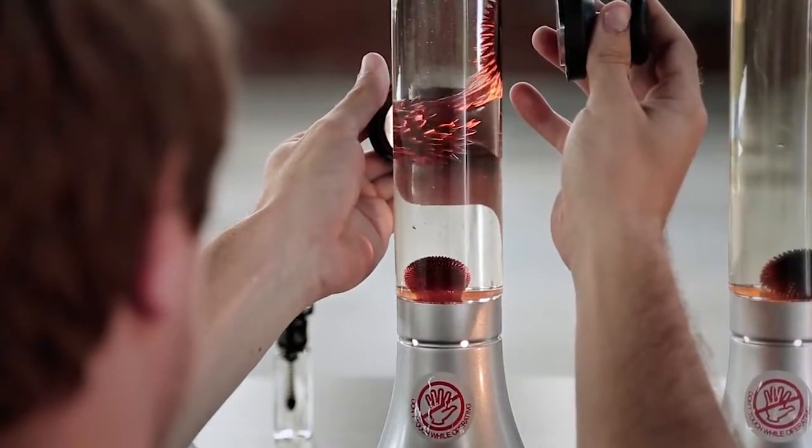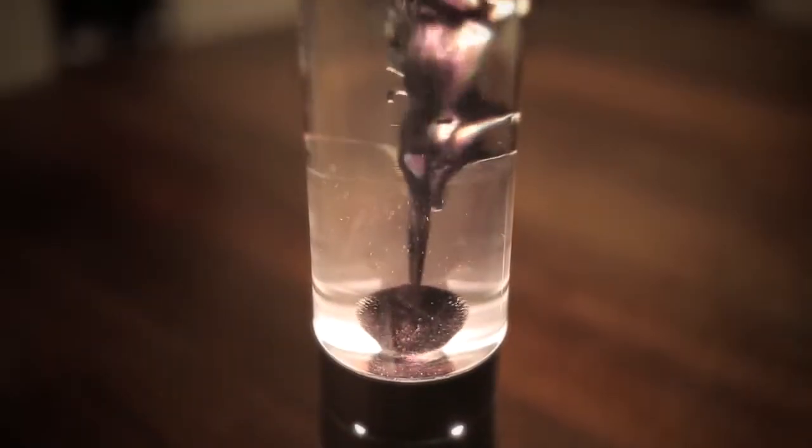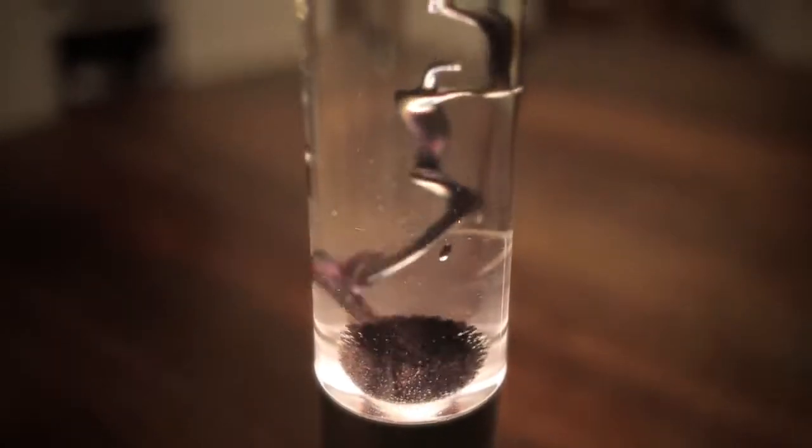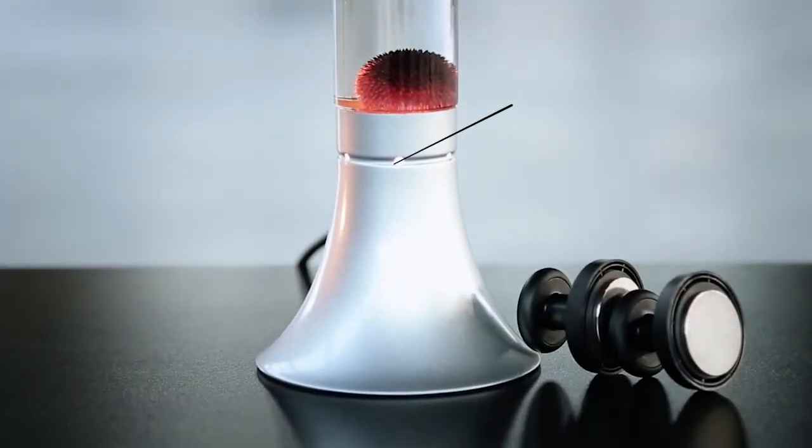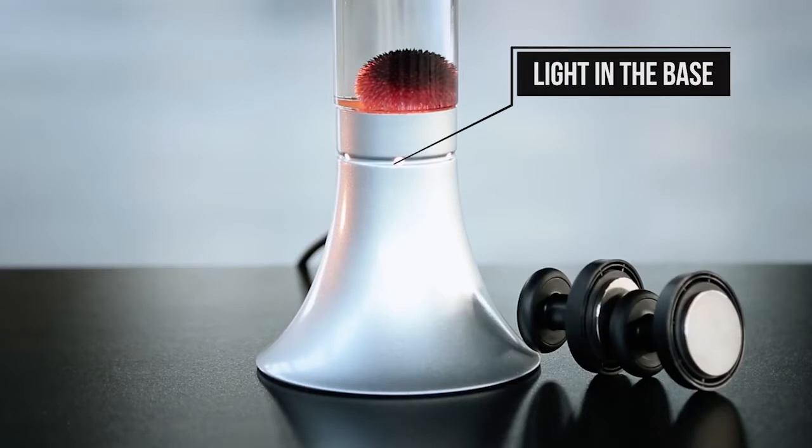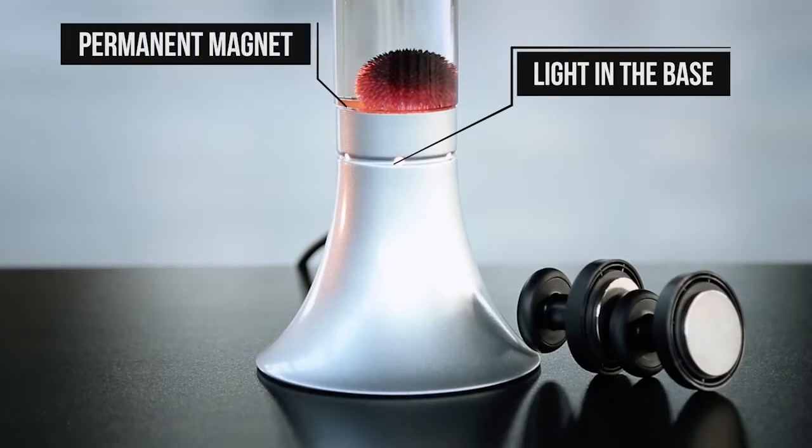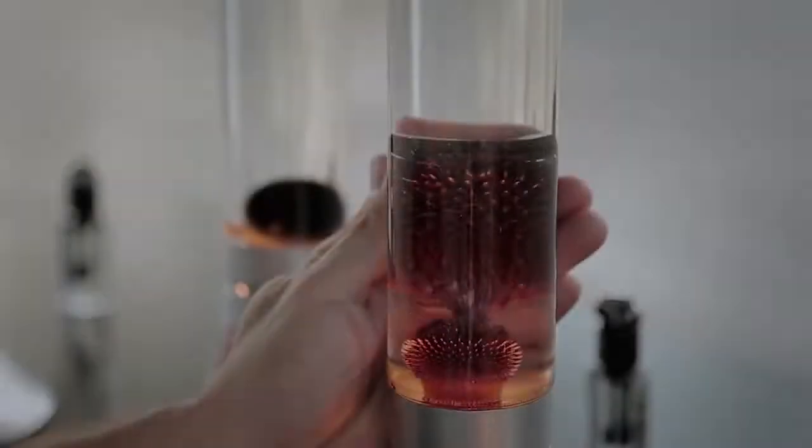This is the Illumination. It has a light in the base that really brings out the vibrant color of the ferrofluid and a permanent magnet at the bottom that keeps the ferrofluid magnetized and spiky.